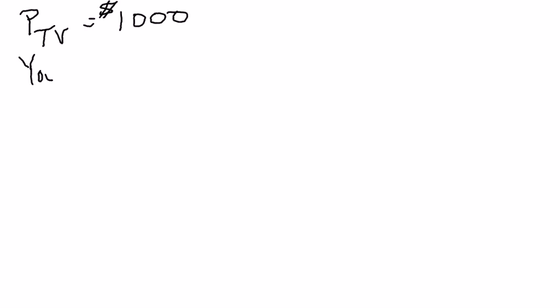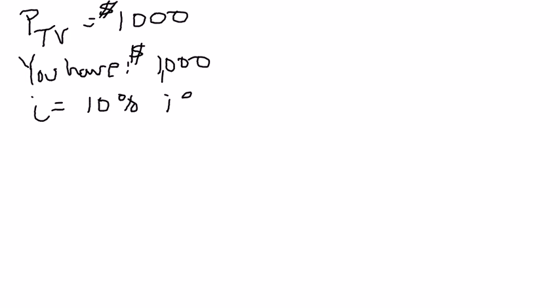It'll be easier to demonstrate this if we just think in terms of a single good. So I'm going to say the price of a TV — and we'll pick an easy number to work with — is a thousand dollars. So the price of the TV today is one thousand dollars. And let's say you have right now one thousand dollars, so your purchasing power is one TV. Now, suppose that if you deposit your money in a savings account you get a nominal interest rate of ten percent, i.e. 0.10.